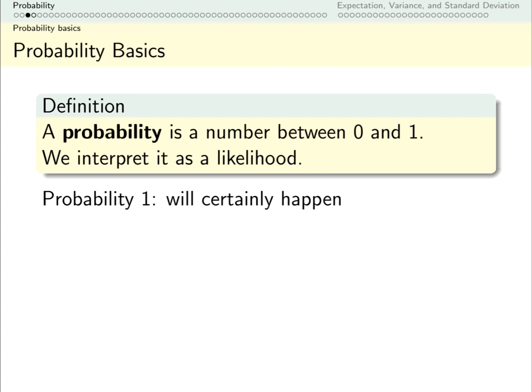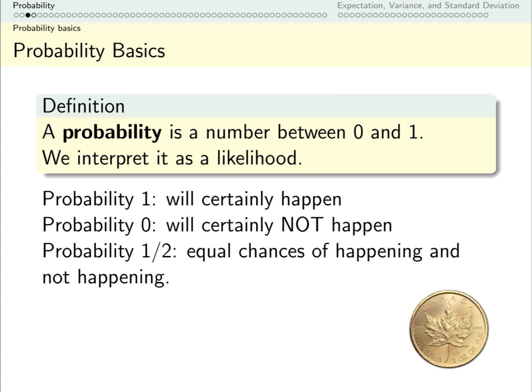If an event has probability 1, that means it's definitely going to happen. If an event has probability 0, it's definitely not going to happen. And if an event has probability 1/2, if I were to run this event a lot of times, I would expect roughly half the time it happened and half the time it didn't.